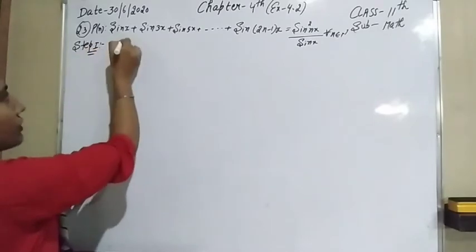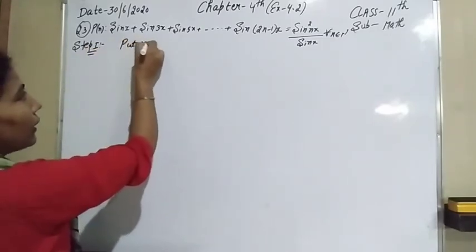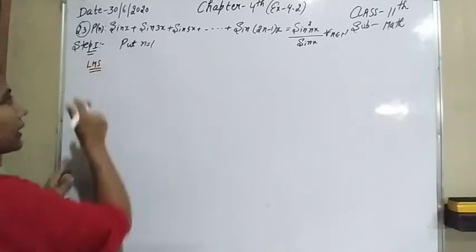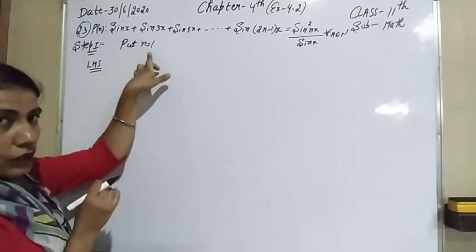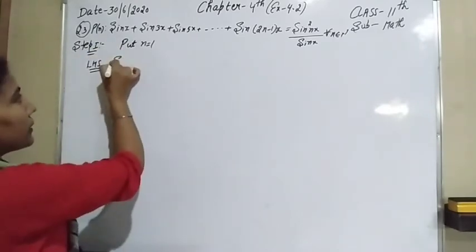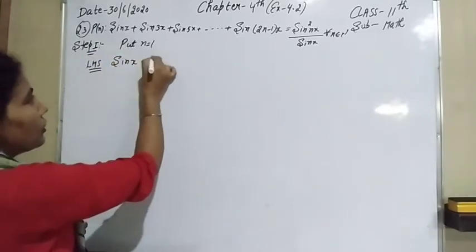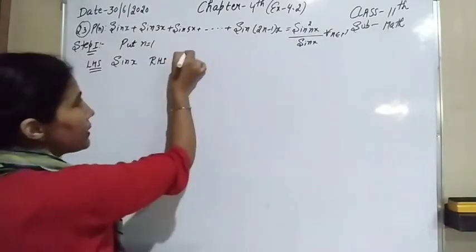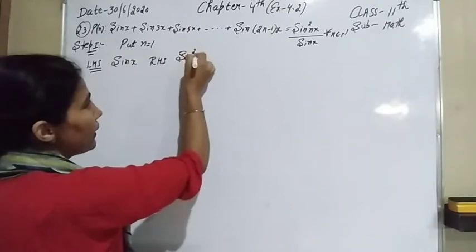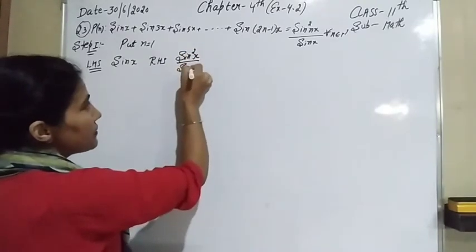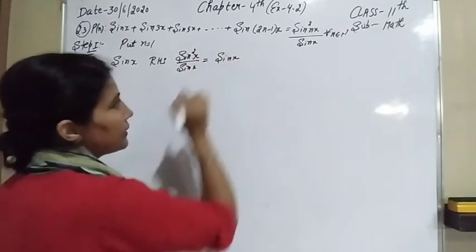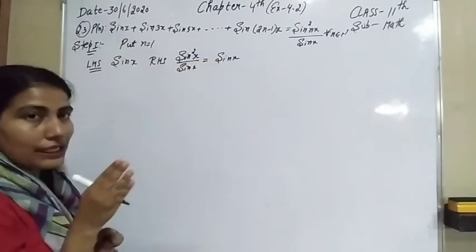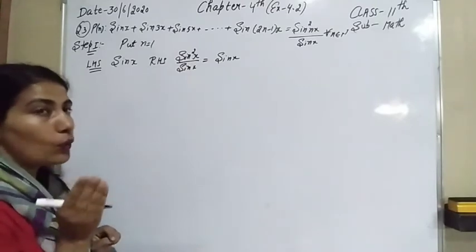In Step 1, put n equal to 1. The left-hand side for n equal to 1: we take only the first term, which is sin x. The right-hand side for n equal to 1: it becomes sin squared x over sin x. One sin x cancels, leaving only sin x. Since left-hand side equals right-hand side, the result is true for n equal to 1.